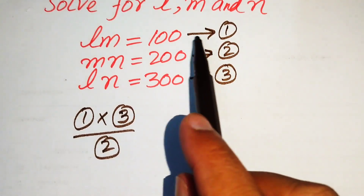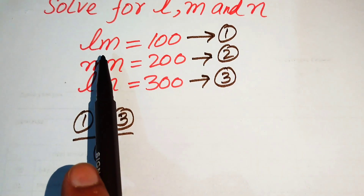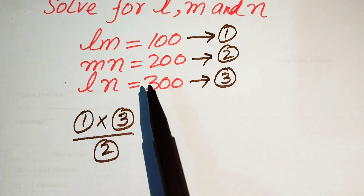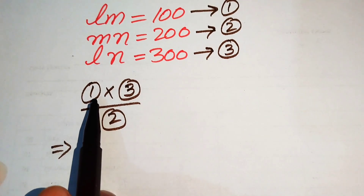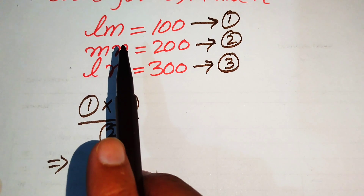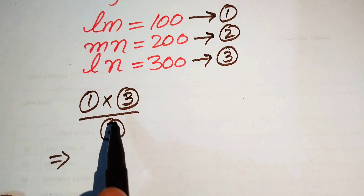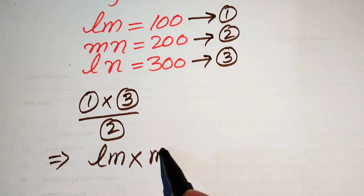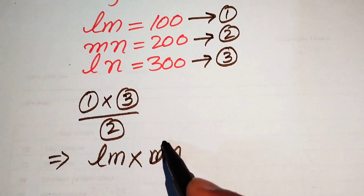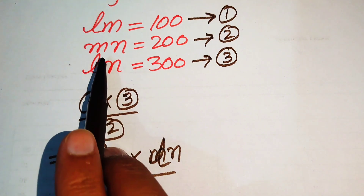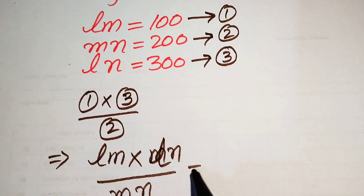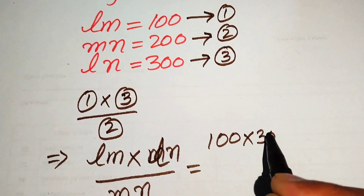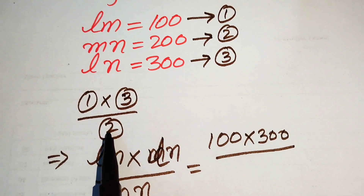You see that this is equation number 1, this is 2 and 3. We multiply the left-hand side with the left-hand side and divide by the right-hand side of equation 2. The left-hand side of equation 1 is L·M, multiplied by the left-hand side of equation 3 which is L·N, divided by the left-hand side of equation 2 which is M·N. On the right-hand side we multiply 100 by 300, divided by 200.